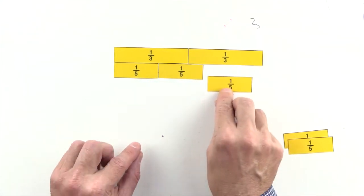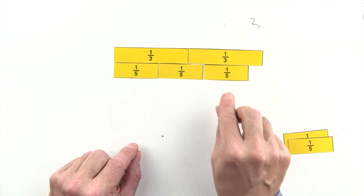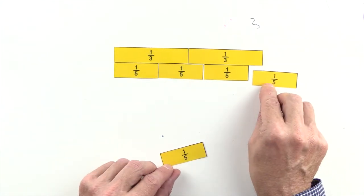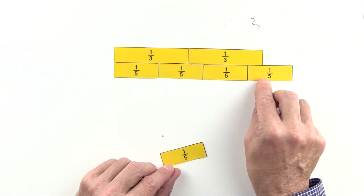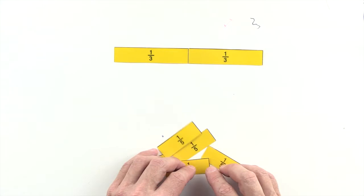3 fifths are less than 2 thirds, and 4 fifths are greater than 2 thirds. So we can't use fifths to make an equivalent fraction to 2 thirds.